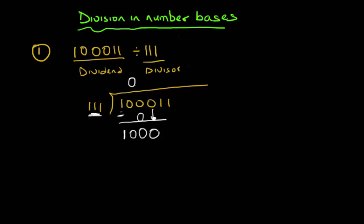'1000' has four digits so it's obviously bigger than '111', so I put one on top. One times '111' gives '111'. I subtract '111' from '1000': one minus one is zero, but I need to borrow — borrowing through the zeros, two minus one is one, one minus one is zero, one minus one is zero. The result is '001'. I bring down the next digit, one, giving me '0011'.